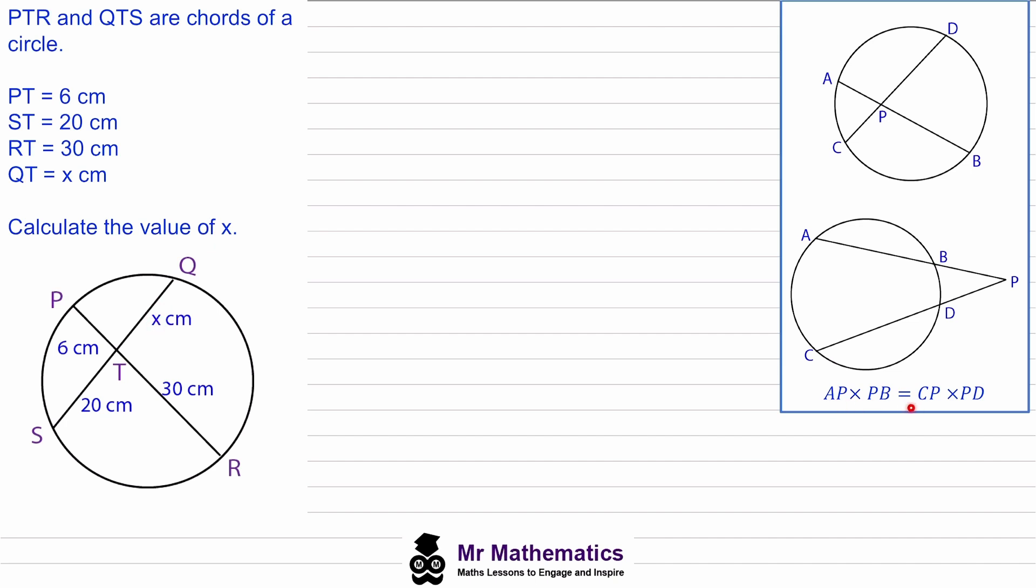So we're going to use this equation with this diagram and we can see that AP is the length from here to here. So in this diagram this will be PT. So we'll say PT multiplied by...